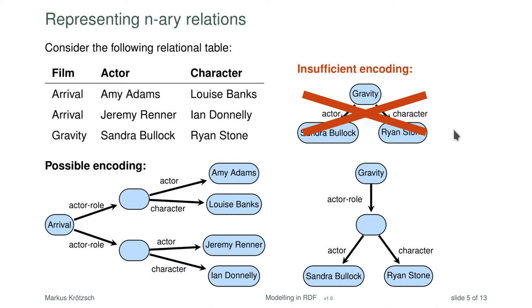This encoding could have been done differently and still be correct — this is just one way, based on the intuition that pairs of actor and character belong together and therefore deserve their own node. Alternatively, I could have had one node per row and linked all three pieces from that row node, just changing the direction of the actor role triple. There would have been other valid ways of encoding this information faithfully in a graph.